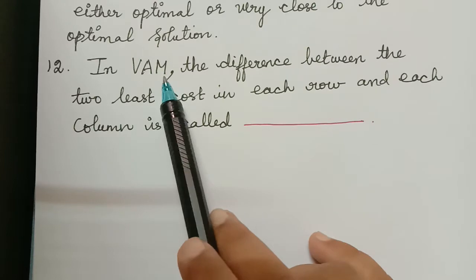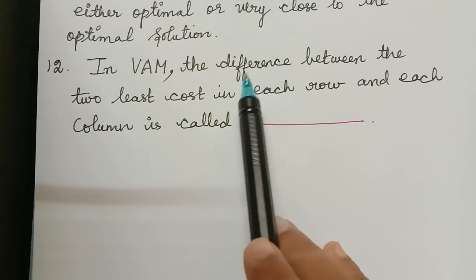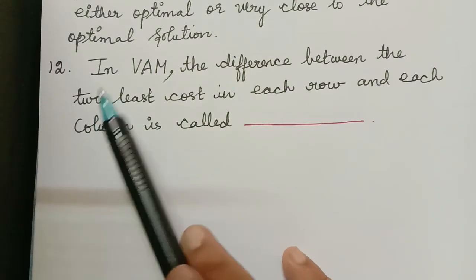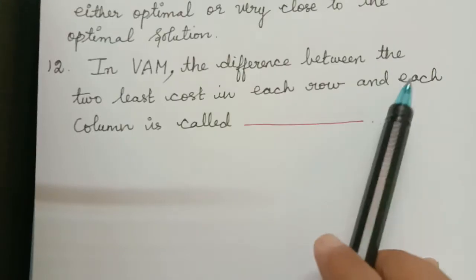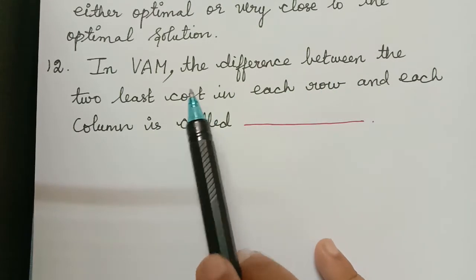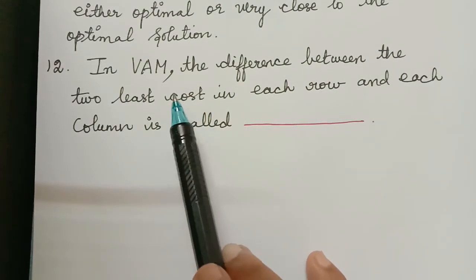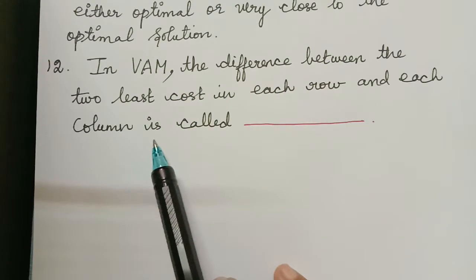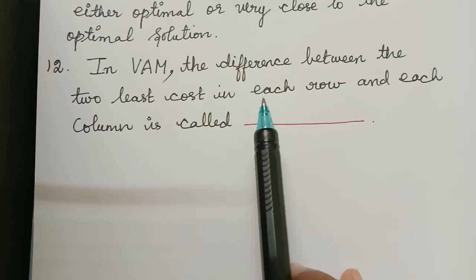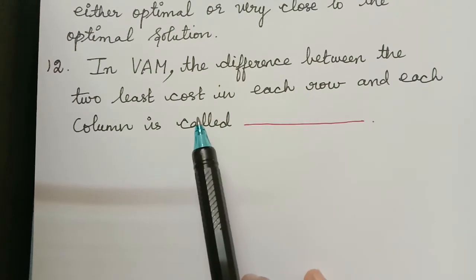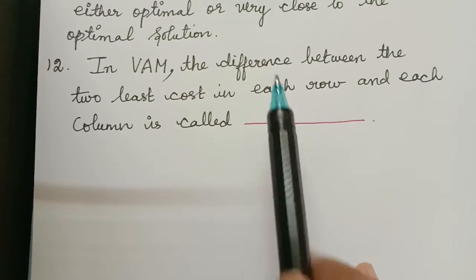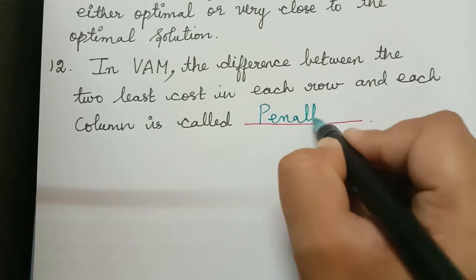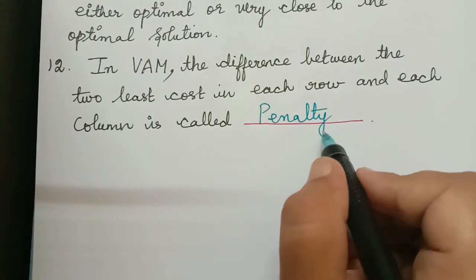In Vogel's approximation method, what we do is find the differences. We consider the first row, take the two least costs, find the difference, and write it down. Similarly, we move on to the second row, third row, and so on. We do the same for each column as well — taking the difference between the two least costs. That difference is known as penalty. So the answer here is penalty.